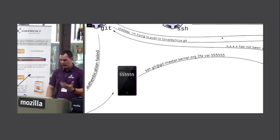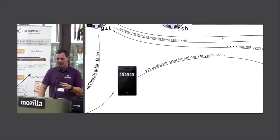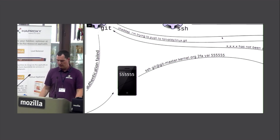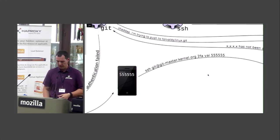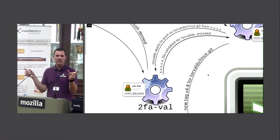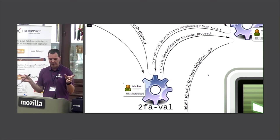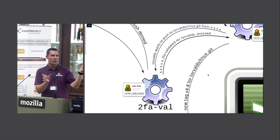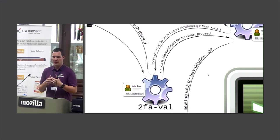To submit the code, Linus runs a separate SSH command: ssh git@git.master.kernel.org run 2fa-val, passing the six-digit code. We verify it by generating the same timestamp — which changes every 30 seconds — and once it matches, that IP address is whitelisted for 24 hours. He can also choose to whitelist for shorter or longer periods, up to a month if he's staying somewhere away from home.